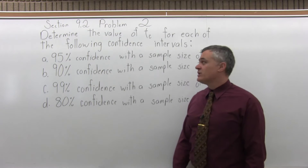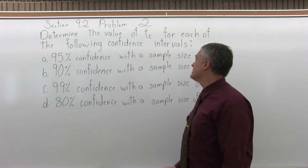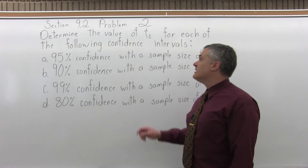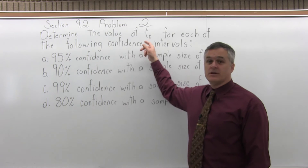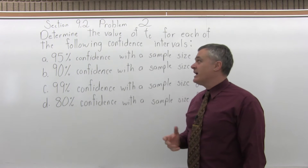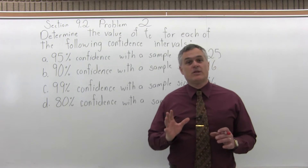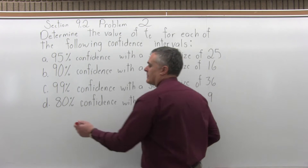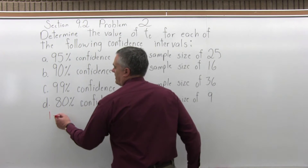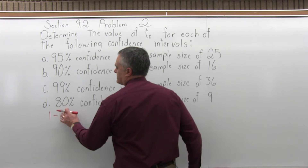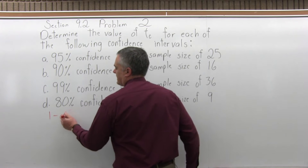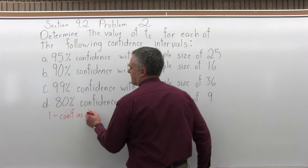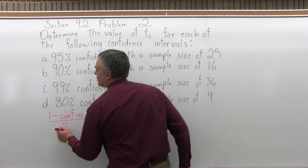The first one is a 95% confidence interval with a sample size of 24. There's a T-chart in your book, in the homework, and what you have to do is find the right column and the right row and see where they intersect.